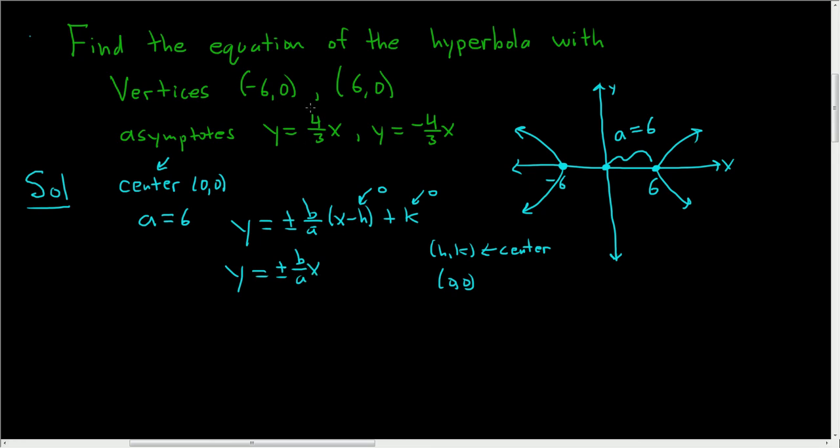So let's use this one. What we'll do is we'll set the slope of 4 thirds equal to b over a. So b over a is equal to 4 over 3. We know one of these variables, we know what a is, so let's go ahead and plug it in. So we get b over 6 equals 4 over 3. Cross multiply, so we get 3b equals 24 and then divide by 3 and that gives us b equals 8.